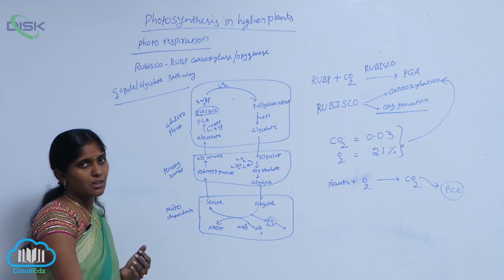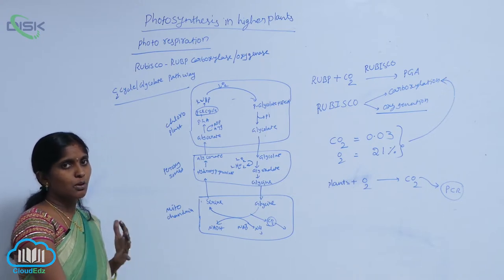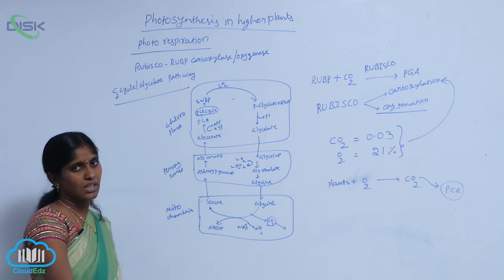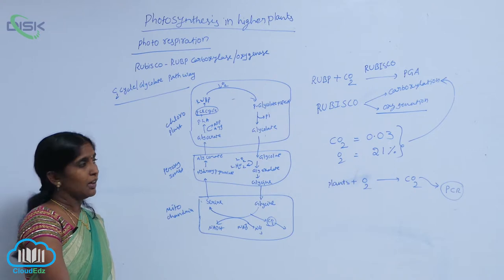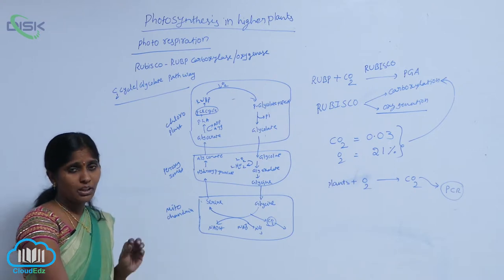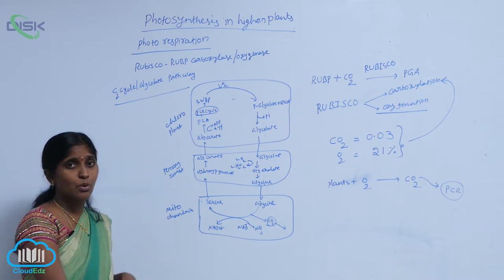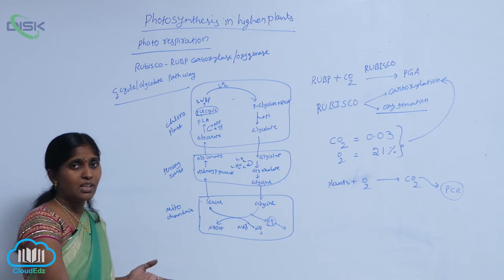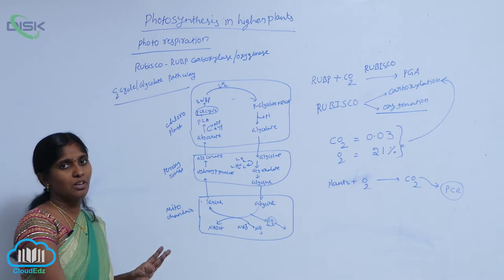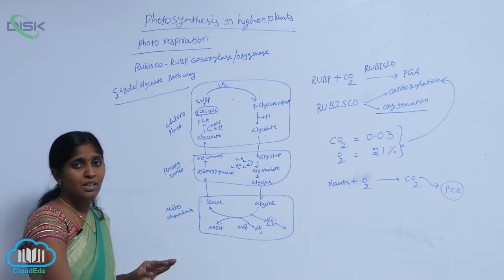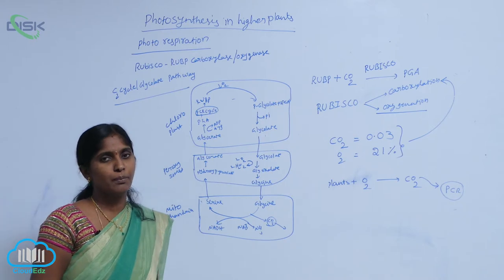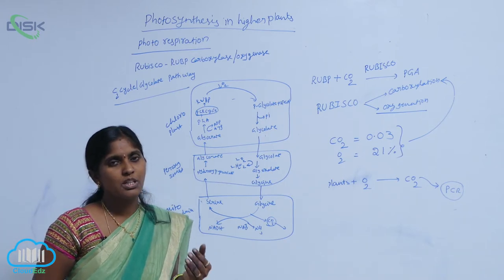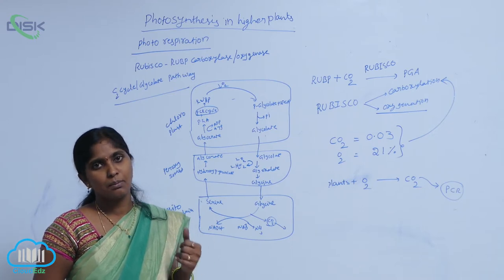In the presence of light, plants absorb oxygen and release CO2. In this process, no ATP is synthesized and no starch is synthesized. So it is considered a waste process for the plant. The C3 plants cannot escape from photorespiration, so this phenomenon is common to C3 plants.